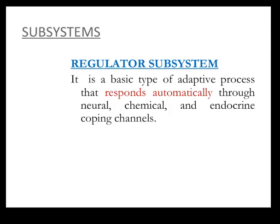The regulator subsystem is a basic type of adaptive process that responds automatically through neural, chemical, and endocrine coping channels. As the pregnant mother progresses through pregnancy, she responds automatically with the help of endocrine factors and maternal hormones, realizing that the symptoms are quite normal in pregnancy.